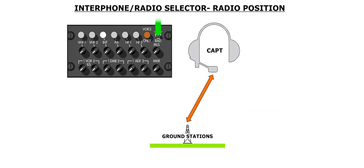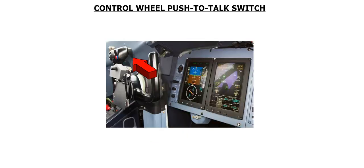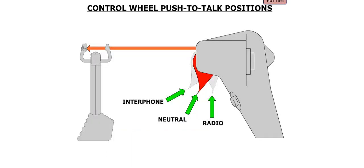The aft position is labeled RAD for radio. This selection is spring-loaded and should be held down while a transmission is being made. This position is used for radio communication between the flight crew and ground stations. The control wheel push-to-talk trigger button can be pushed forward for interphone communication, or pulled aft for radio communication. The forward position would be used if the INT/RAD switch is selected to the neutral position, which is sometimes useful to cut down on static noise through the headset channels. If this were the case, you would push forward on the control wheel push-to-talk button to talk with the other crew member.